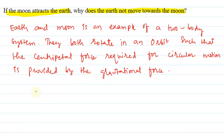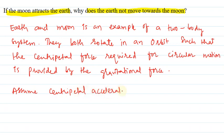Circular motion mein centripetal force zaroor hai, aur yeh kaun provide karta hai? Gravitational force provide karta hai. Centripetal force kya hai? Centripetal force hai the force which pulls the body towards the center when the body is in circular motion. Jo force body ko center ki taraf pull karta hai jab body circular motion mein hoti hai, use centripetal force kehte hain.